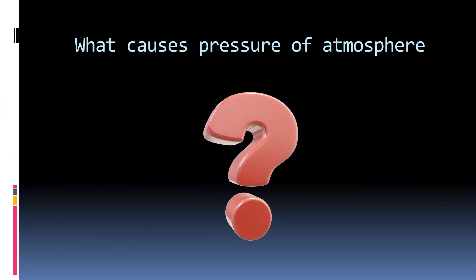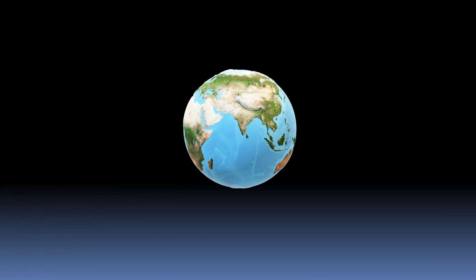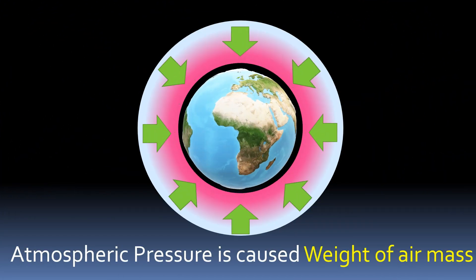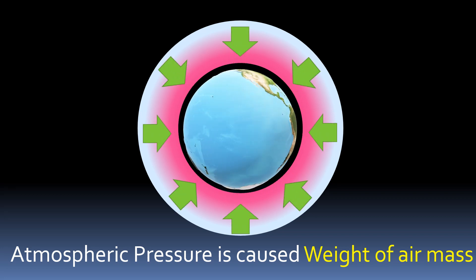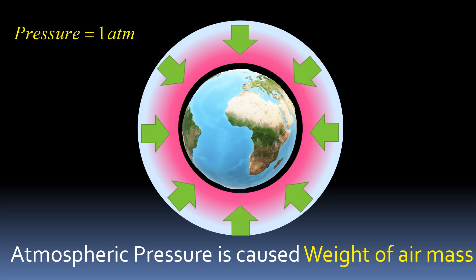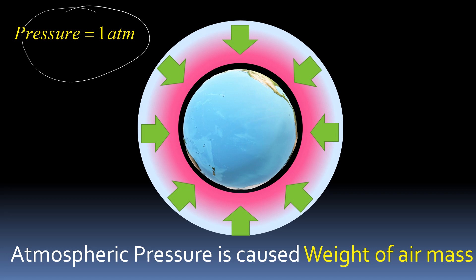What causes atmospheric pressure? This is Earth. Earth is surrounded by an envelope of air, and air is denser near the surface of Earth. This air mass is what is causing the atmospheric pressure. How much is this pressure? This pressure, when measured near sea level, is one atmosphere and is also equivalent to one bar.